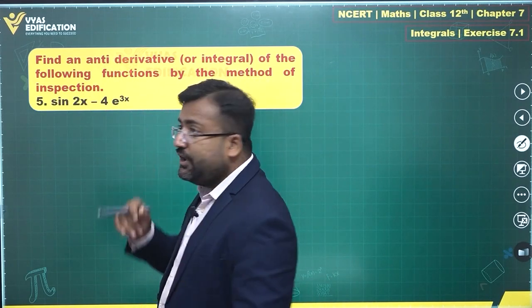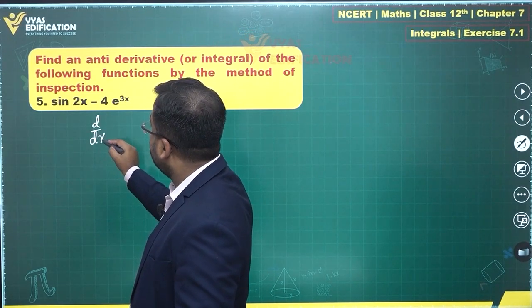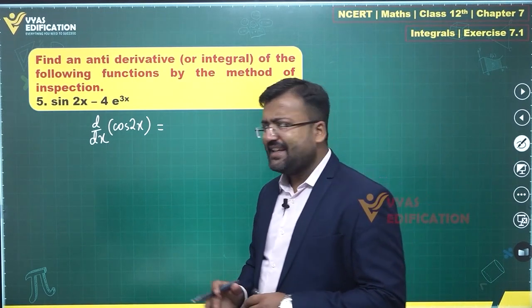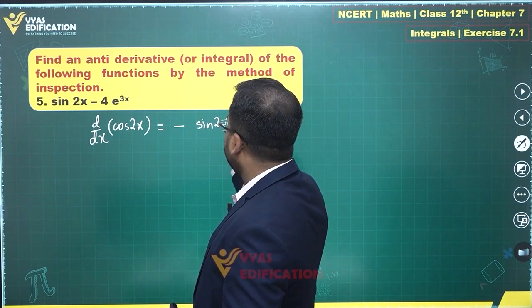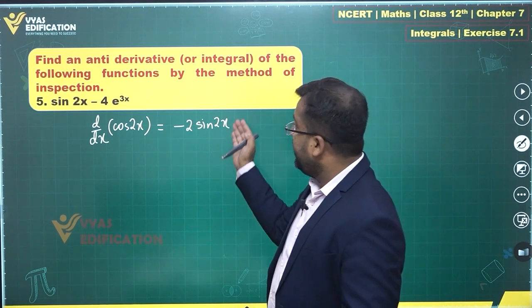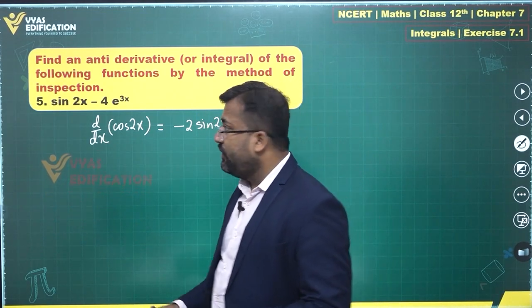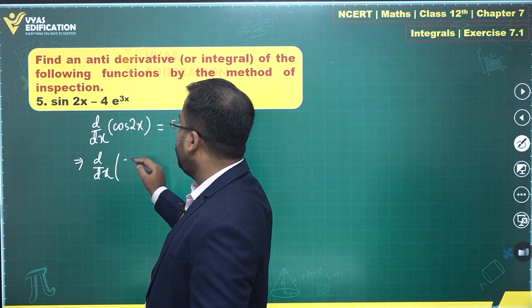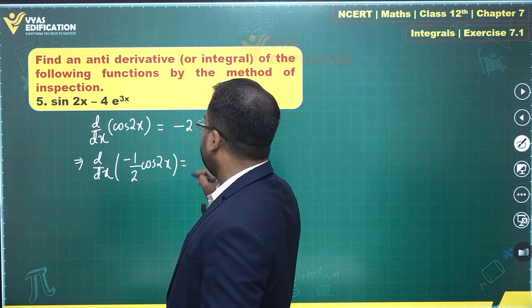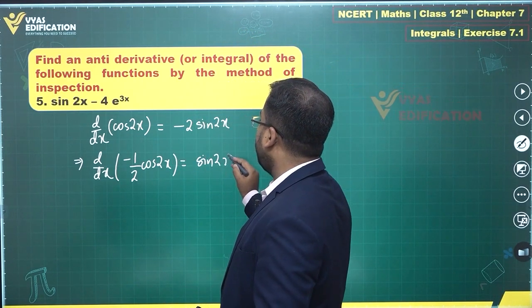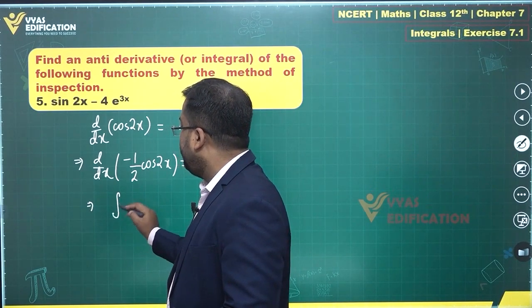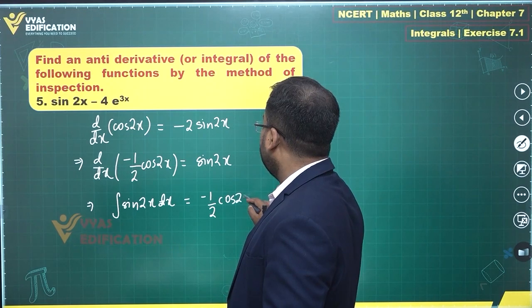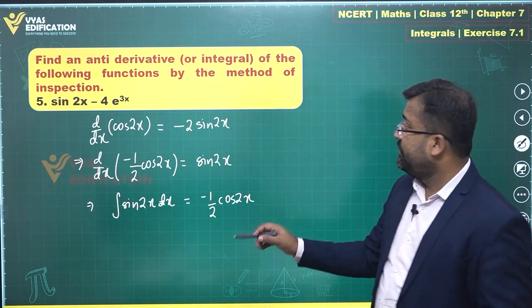For sin2x, I look at the derivative of cos2x. The derivative of cosx is −sinx, so the derivative of cos2x becomes −sin2x times 2, giving −2sin2x. So I need to take a factor of −1/2 inside the derivative: d/dx of (−1/2 cos2x) = sin2x. Therefore, the integral of sin2x with respect to x is −(1/2)cos2x.